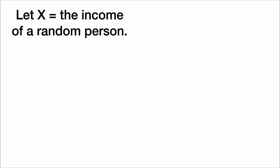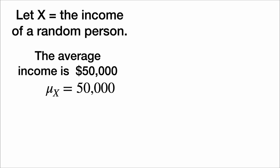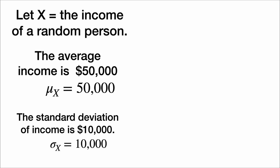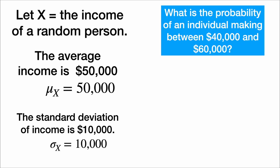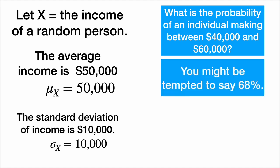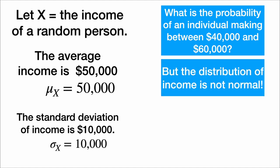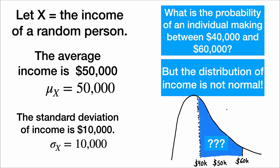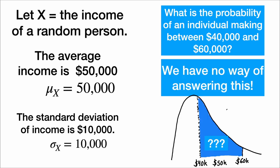Now on to the central limit theorem. Let's move on to a different random variable, the income of a random person. Suppose the average income is $50,000 and the standard deviation is $10,000. What is the probability of an individual making between $40,000 and $60,000? You might be tempted to say 68%, but the distribution of income is not normal. It's skewed to the right, and we have no way of answering this question without more information.